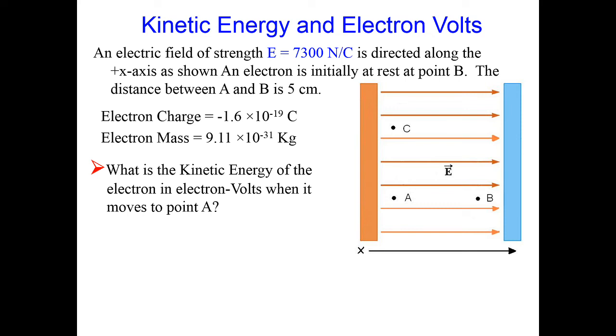First, we want to find the voltage from B to A. The electric field is 7,300 newtons per coulomb, so we multiply 7,300 newtons per coulomb by 0.05 meters and get a voltage of 365 volts. Notice we are increasing in voltage from B to A.